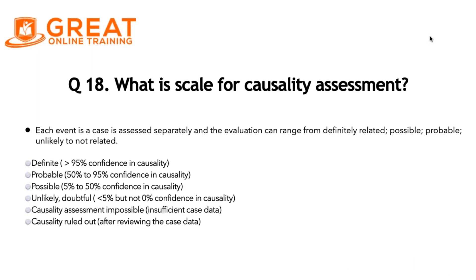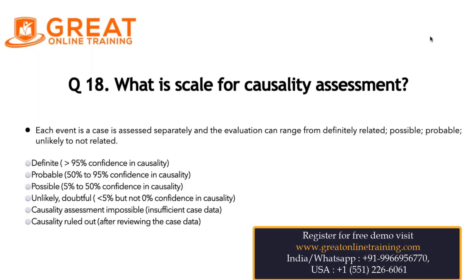We also have causality ruled out. After reviewing the case data, if we clearly determine that the event is not related to the medication, then we use the causality term causality ruled out. These are the different scales for causality assessment, and depending on the different criteria, we select one of the scales for each event reported in the case.